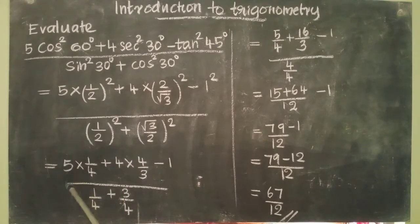So we get 5 × 1/4 + 4 × 4/3 - 1 divided by 1/4 + 3/4.